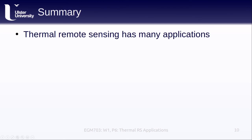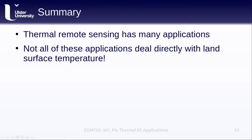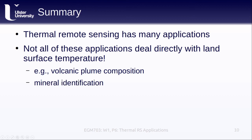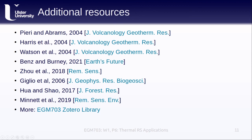In this lesson, we've looked at a few different applications of thermal remote sensing across a number of different fields. Importantly, thermal remote sensing is not limited to applications dealing directly with land surface temperature—for example, we saw how it can be used to estimate volcanic plume composition. Other applications, which we'll look at next week, include mineral identification. I've included links to the referenced articles in this presentation; they're also available in the slide notes, and PDF versions can be found on Blackboard or in the Zotero library, along with a few additional papers.